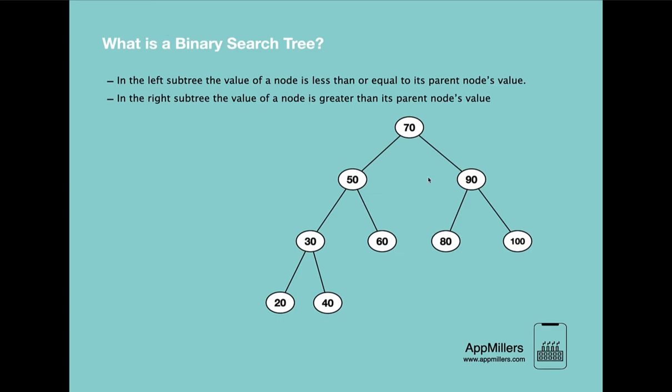This is an example of binary tree. If we look at this binary tree very carefully we can see these properties. As a root node we have 70. In the left subtree we have the value of node which is less than or equal to root node. In this case 50 is less than 70. In the right subtree we have a node which is greater than the value of root node. So 90 is greater than 70.